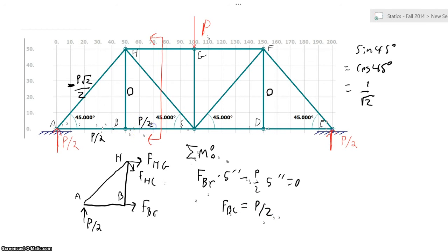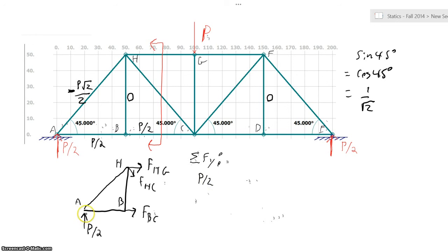That might have been obvious, because if BH is a zero force member, then these forces have to be equal to each other. Now let's look at the sum of the forces in the Y direction. We have P over 2 acting on our body at A, and we have negative FHC times sine of 45 acting at H. The sum of those is going to be zero. You can see that FHC is going to be equal to P over 2 root 2. This is a positive number, and so HC is in tension, where HA was in compression.